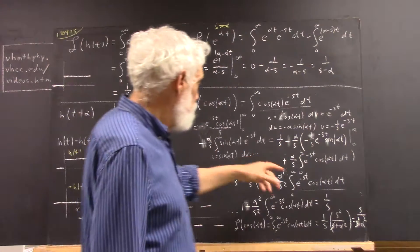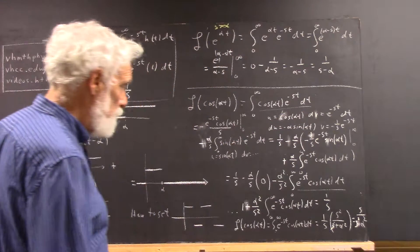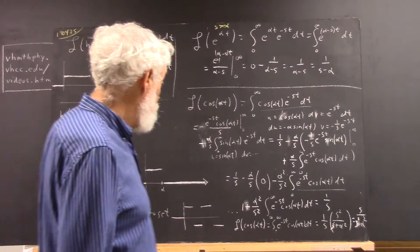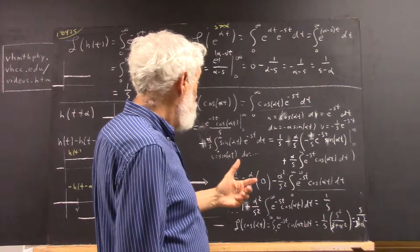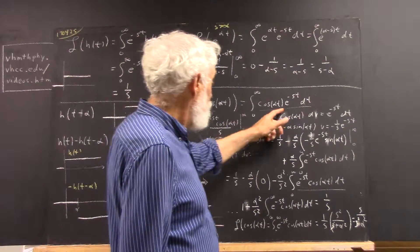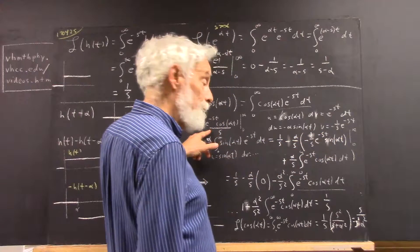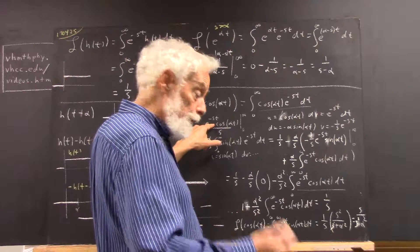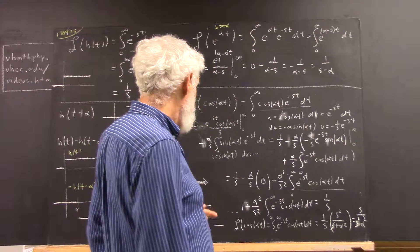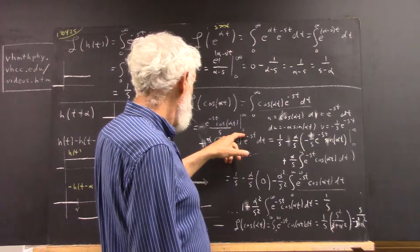Now, keeping the signs straight, you see I wrote down a couple of incorrect signs there, but I think I have them right now. Our u v here is going to be this. Evaluated between zero and infinity. At infinity, e to the negative s t is going to be zero.